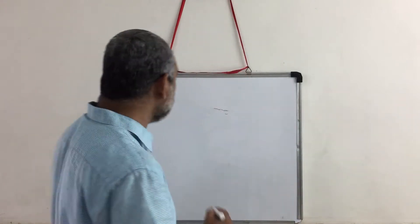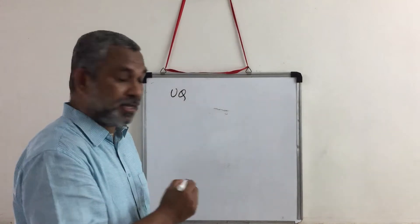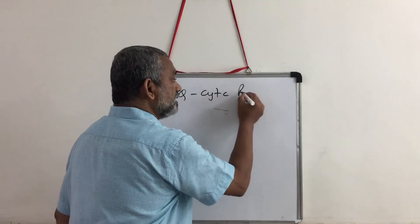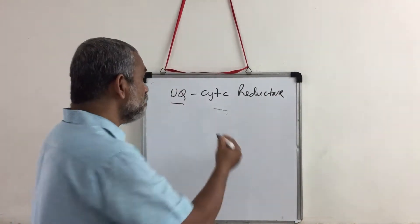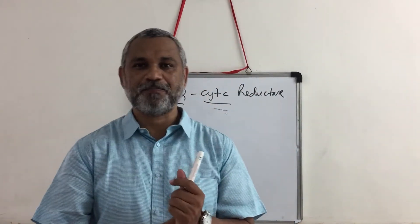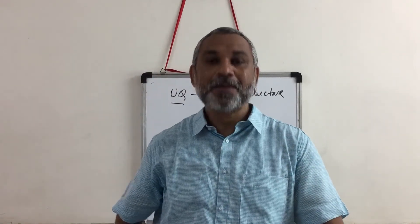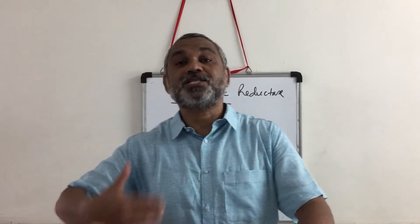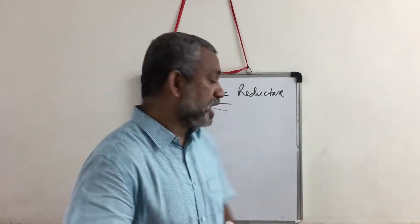Let us look at the electron transport occurring in Complex 3. Remember, the name of Complex 3 is ubiquinol-cytochrome C reductase. There is transfer of electrons from UQH2 to cytochrome C, so this oxidation-reduction happens in this particular complex. It is one of the complexes that has been studied elaborately, and the kind of electron transport occurring here is known as the Q cycle.